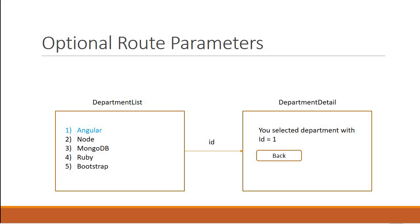In this video we are going to learn about optional route parameters. In the department detail component we need to add a back button. When we click on the back button we should be navigated back to the department list component and the previously selected department must be highlighted. For example, if I click on Angular I should be navigated to the department detail component, and clicking the back button should highlight Angular in the list. This can be achieved using optional route parameters.